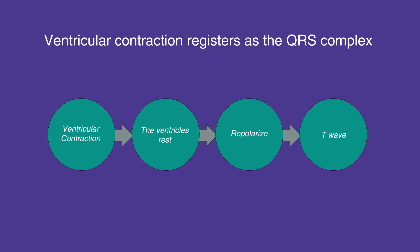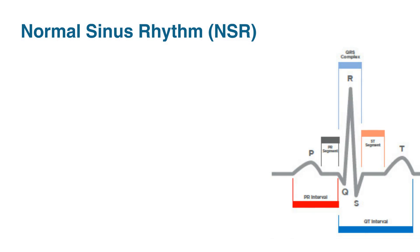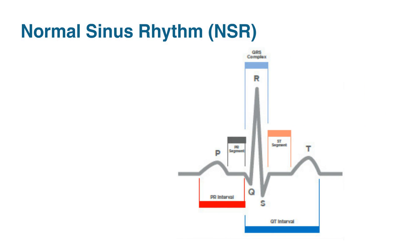The P wave, QRS complex, and the T wave together at proper intervals are indicative of normal sinus rhythm, or NSR.